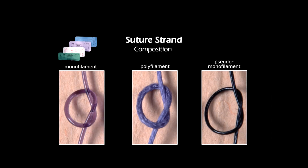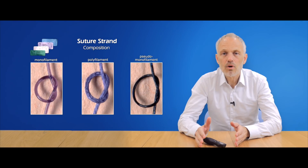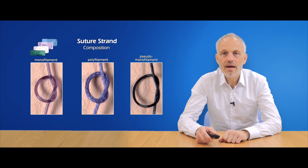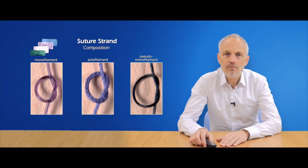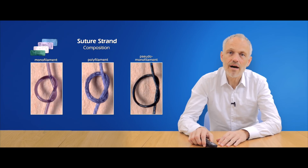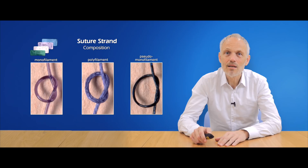Regarding the suture strand, there are three main modalities: monofilament, polyfilament, and pseudomonofilament sutures. Pseudomonofilament means polyfilament sutures with a coating and smoother outer surface. Generally, polyfilament sutures show more sawing effects when pulled through tissues. That is why monofilament sutures are preferred. In high magnification you can see the differences, and it is easy to imagine that in aqueous, bacteria-loaded environments, bacterial adherence will be more pronounced with polyfilament than monofilament sutures.